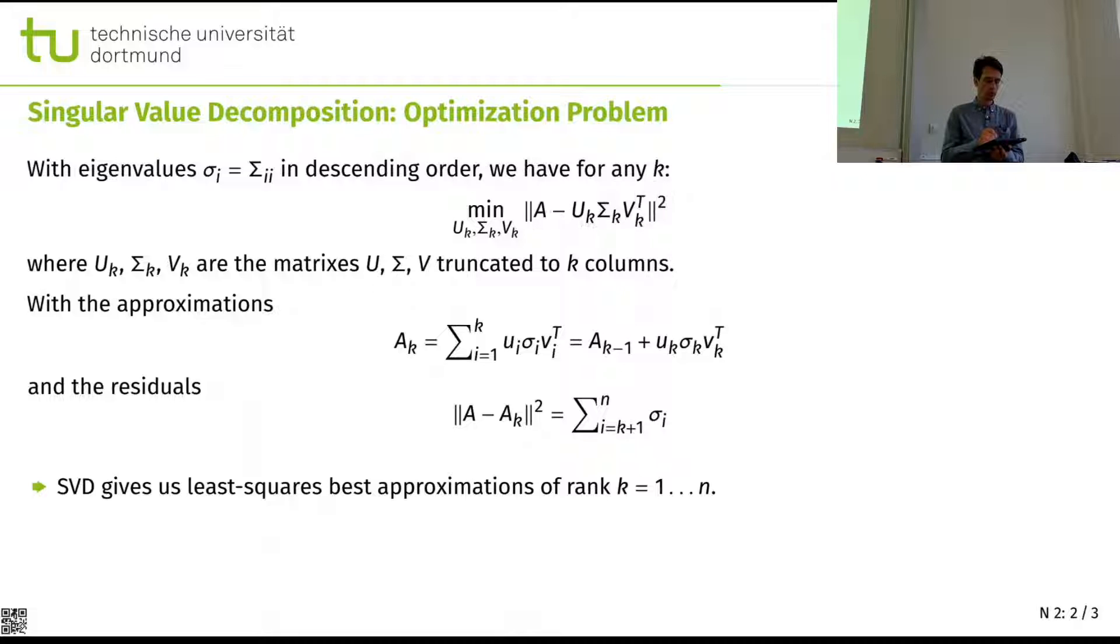We're not going to look into the algorithm how this is obtained here. In particular, if you want to do this numerically and truncate it, it gets quite messy and it tends to get unstable if you go to the small eigenvalues. But the property that is interesting is that for every k, this is the optimum least squares approximation.